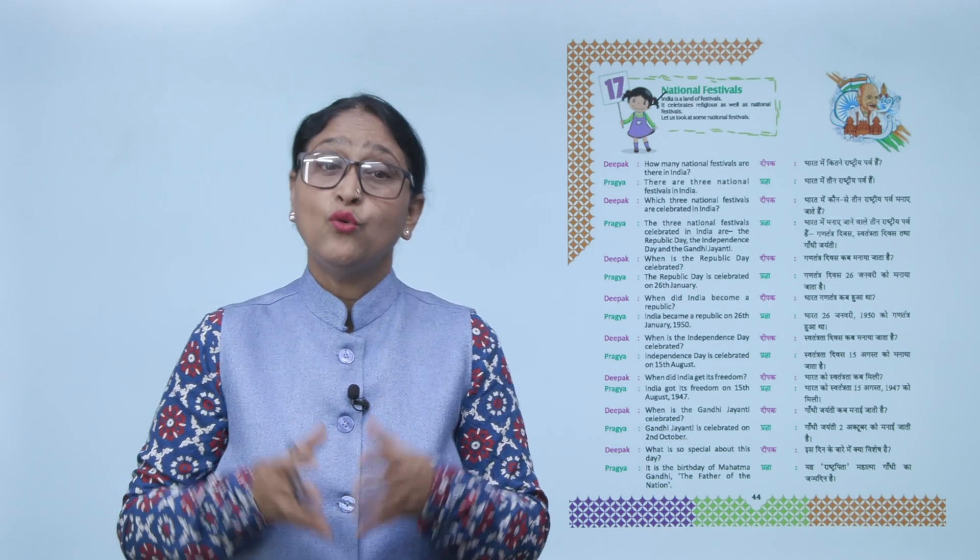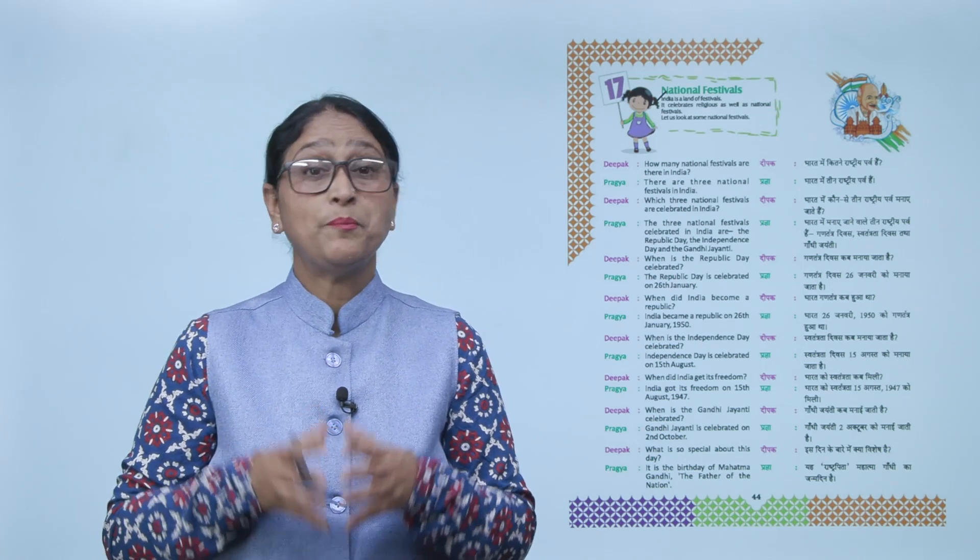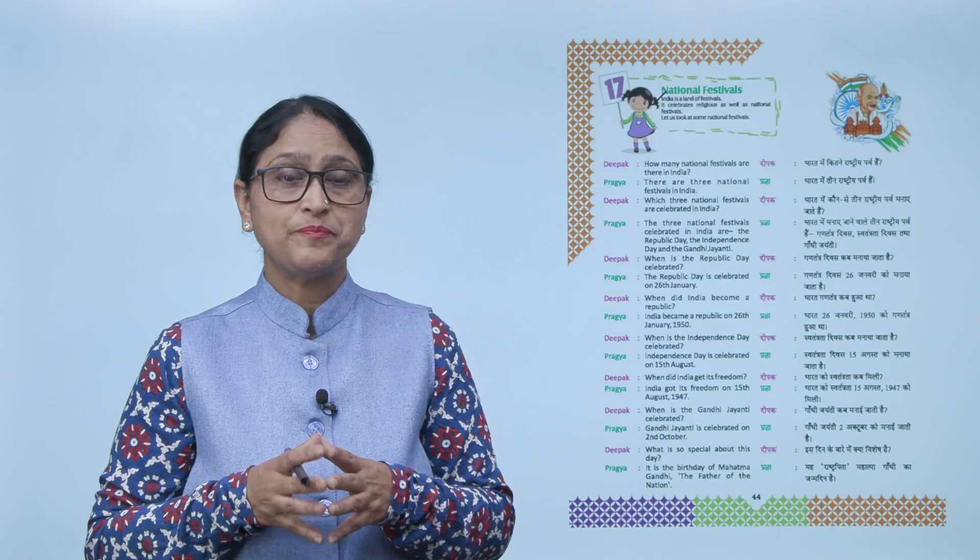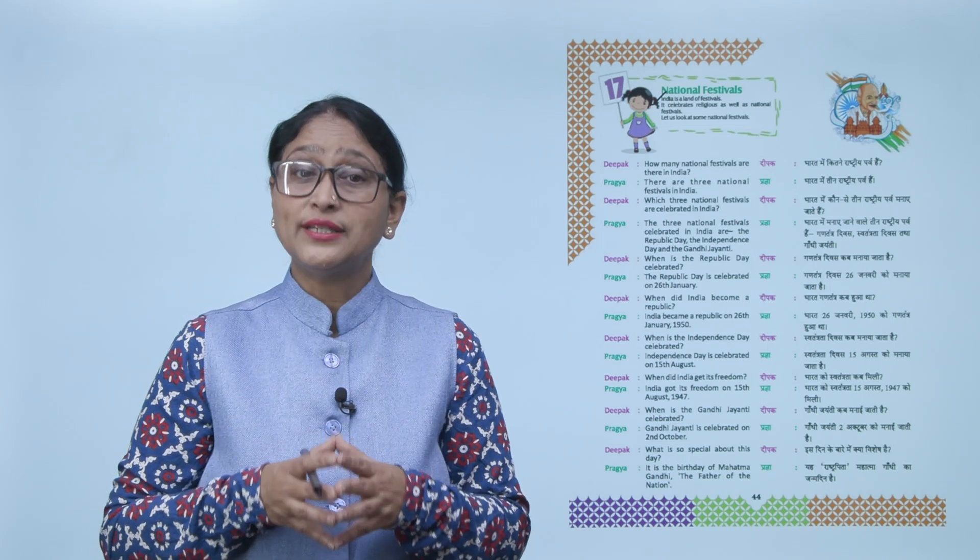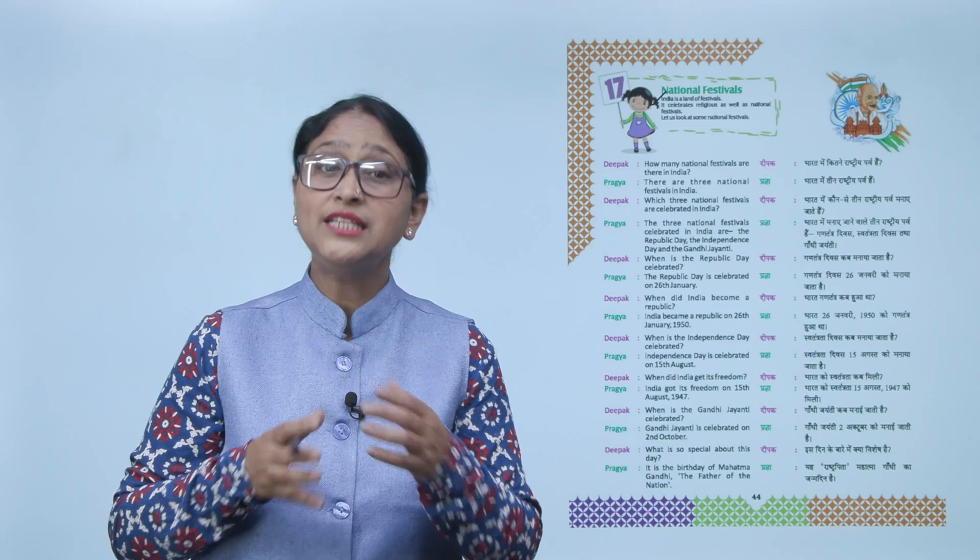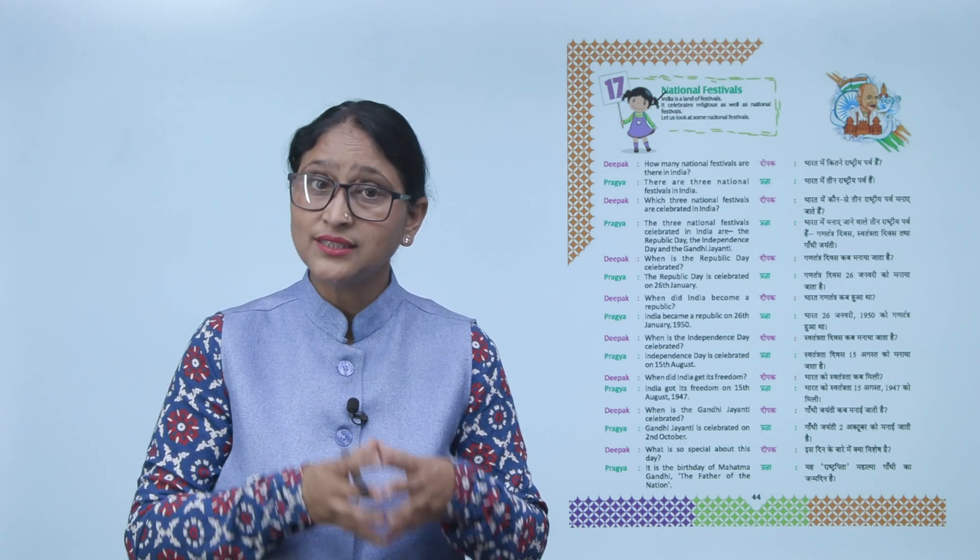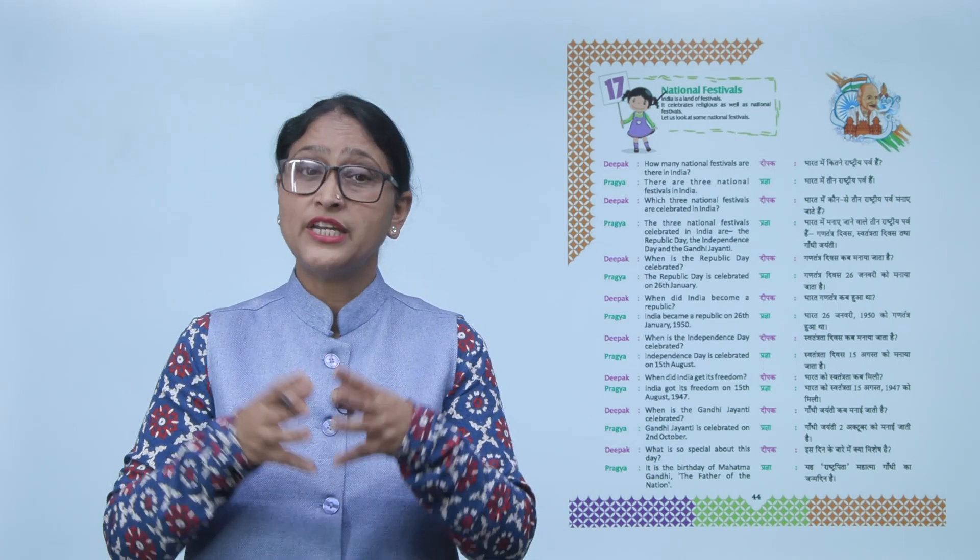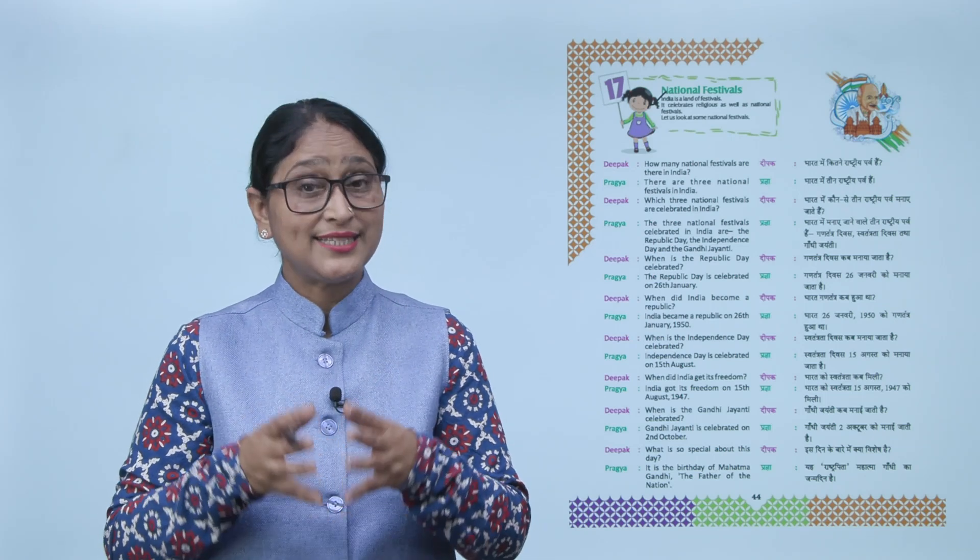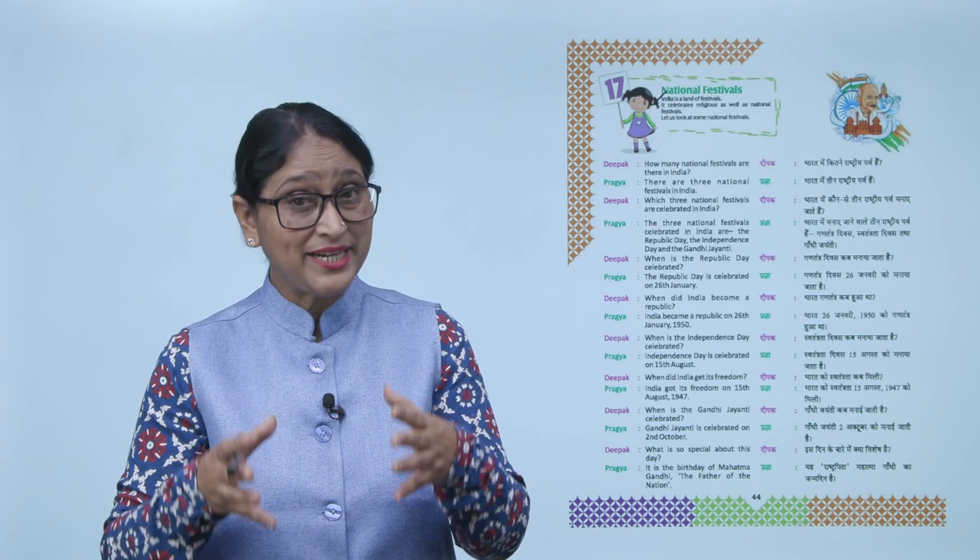Deepak, when did India get its freedom? Pragya: India got its freedom on 15th August 1947. That is why we celebrate Independence Day on this day.